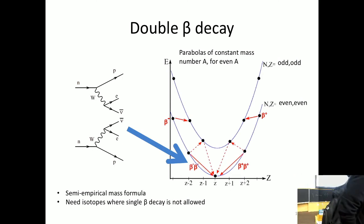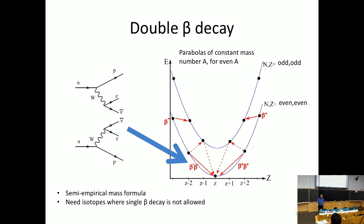Double beta decay is a process that exists in nature. It was predicted by Goeppert-Mayer in the 1930s or 40s and was first observed, I think, in the 50s. It's the rarest nuclear process, but it exists. What happens is that beta decay is just a neutron emitting a W boson and producing an electron and an antineutrino. In the final state, if you count lepton number, you get two lepton numbers of +1 and -1, so the final lepton number is zero. All Majorana processes violate lepton number, but this is fine in the Standard Model.